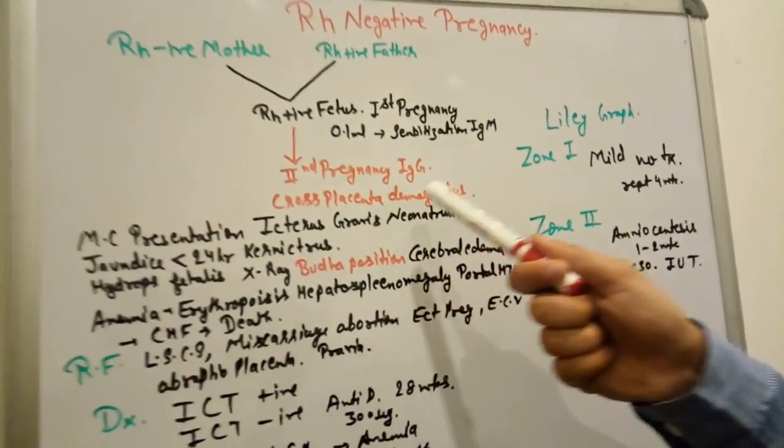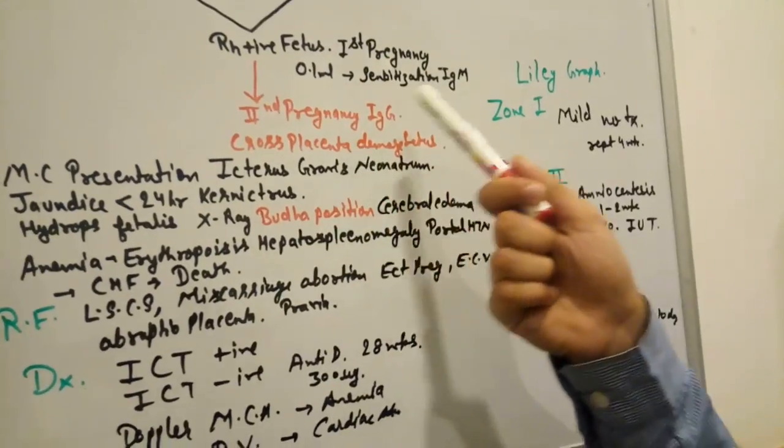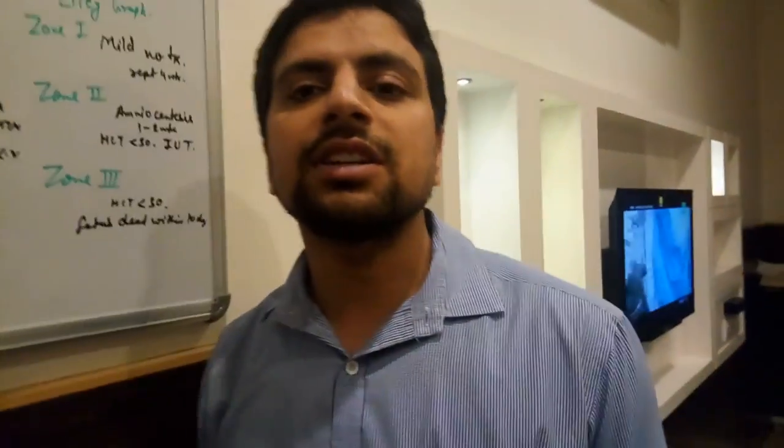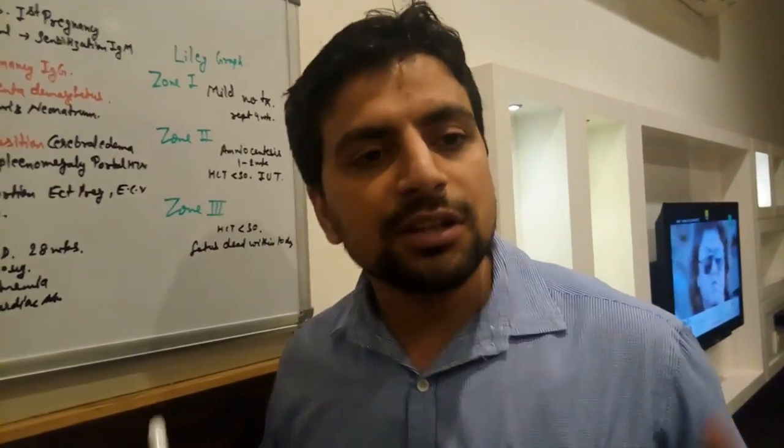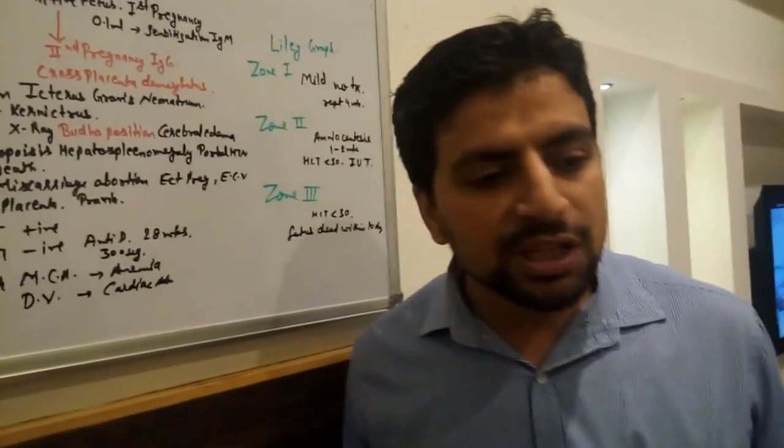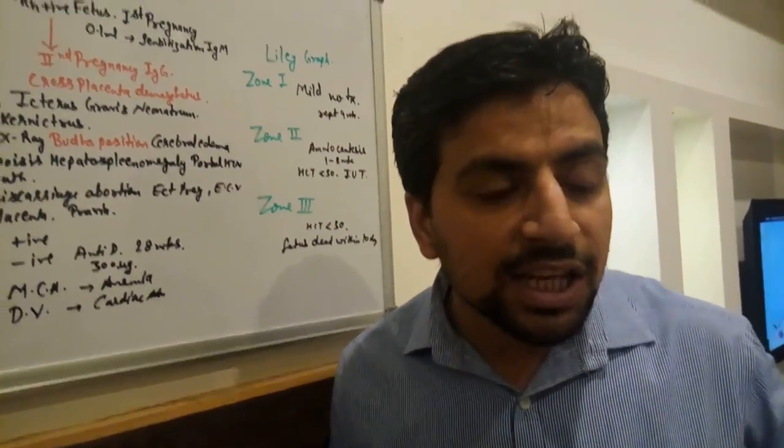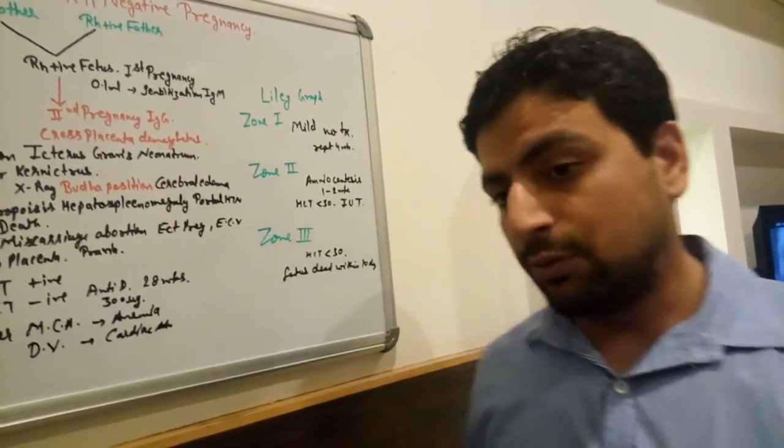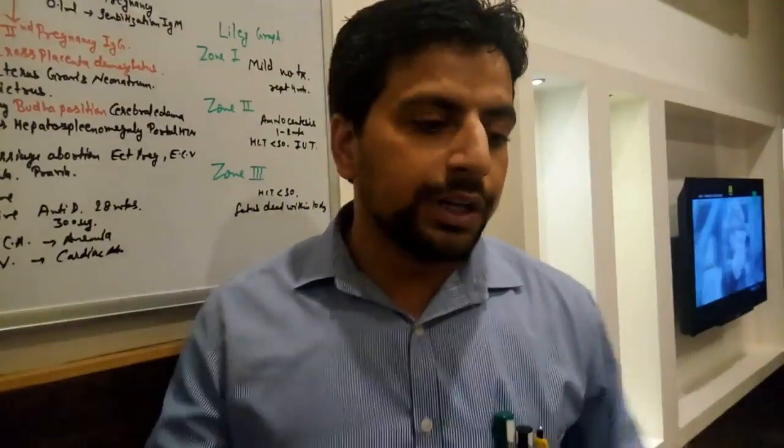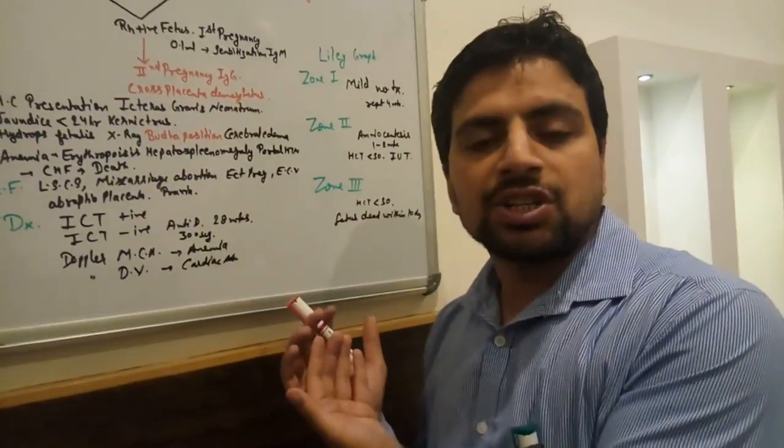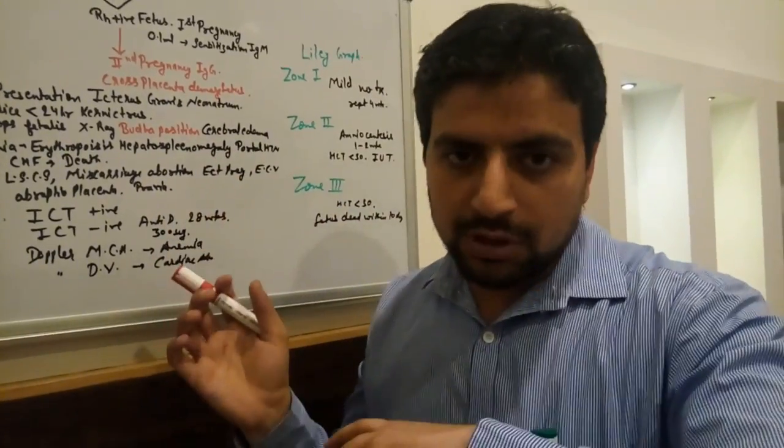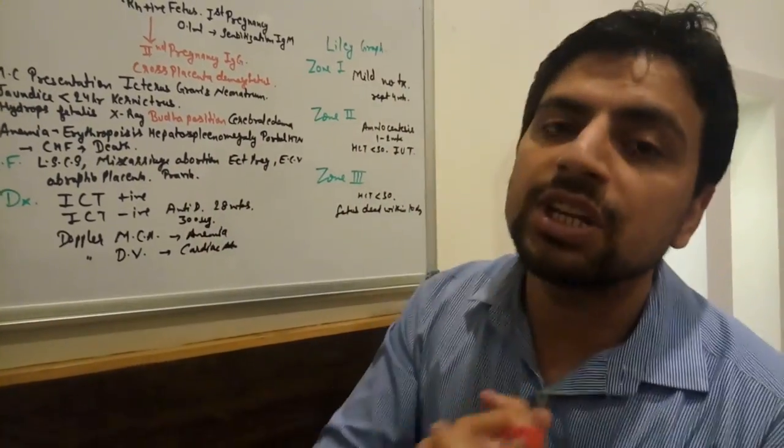Do you think only second pregnancy is a risk factor? No, my dear friends. In first pregnancy there is also a risk factor. If mother is already transfused with Rh positive blood, maybe wrongly, so if she is Rh negative and received Rh positive blood, she already has antibodies and her fetus is at risk in first pregnancy to develop Rh incompatibility.